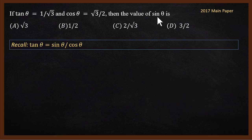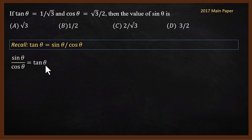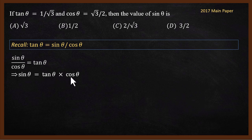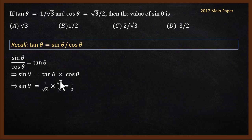We know that tanθ equals sinθ by cosθ. That means sinθ by cosθ is tanθ, so sinθ can be written as tanθ multiplied by cosθ. We know the values of tanθ and cosθ, so substituting we get 1 by root 3 multiplied by root 3 by 2. Root 3 and root 3 cancel, and you are left with 1 by 2.